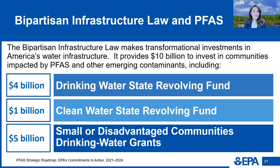Of the $10 billion: $4 billion will flow through the Drinking Water State Revolving Fund; $1 billion will flow through the Clean Water State Revolving Fund; and $5 billion will provide grants to addressing emerging contaminants in small and disadvantaged communities. All funds are provided either as grants or principal forgiveness loans. In February 2023, EPA announced the availability of $2 billion from this program to address emerging contaminants, including PFAS, in drinking water across the country.